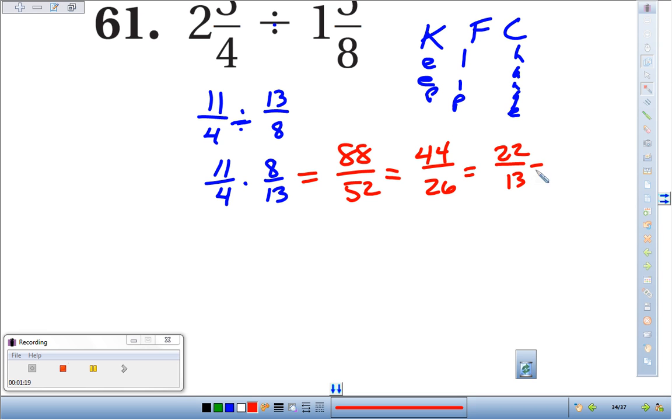Can't reduce any further than that. That 13 goes into 22 one time, and that would leave a remainder. Let's see, 13 to 22, 13 to 20 is 7. Another 2 would make 9 thirteenths.